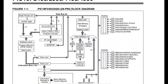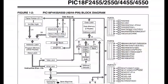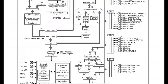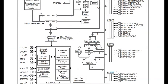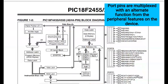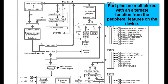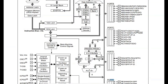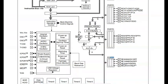Now let us see the block diagram of the PIC18F4550 controller. The block diagram can be divided into different parts. The port section includes 5 ports: Port A, Port B, Port C, Port D, and Port E. Each port consists of a number of pins.